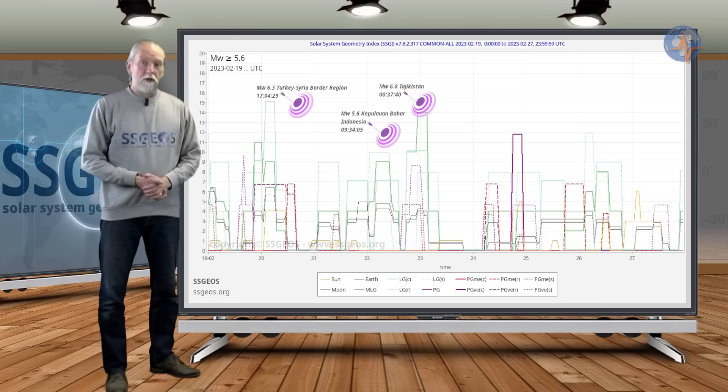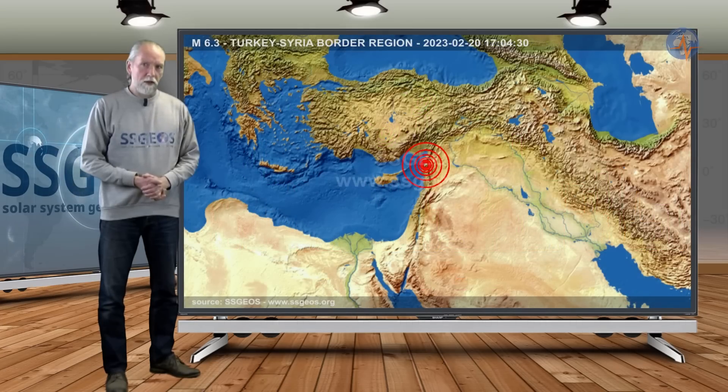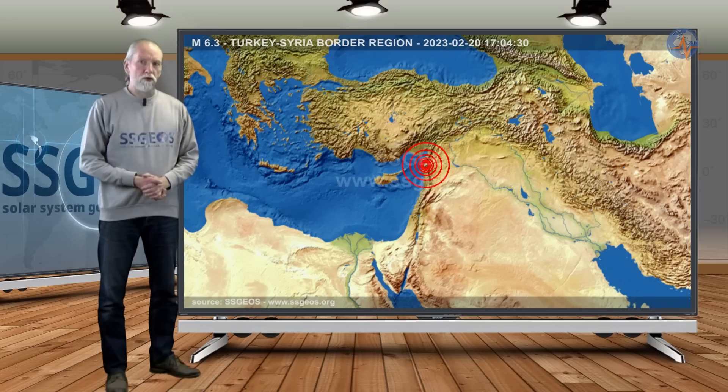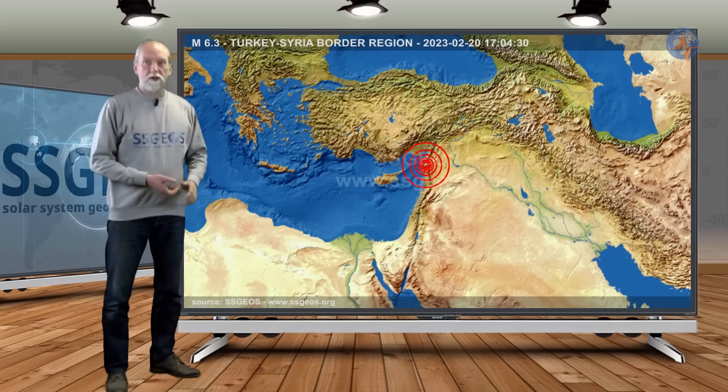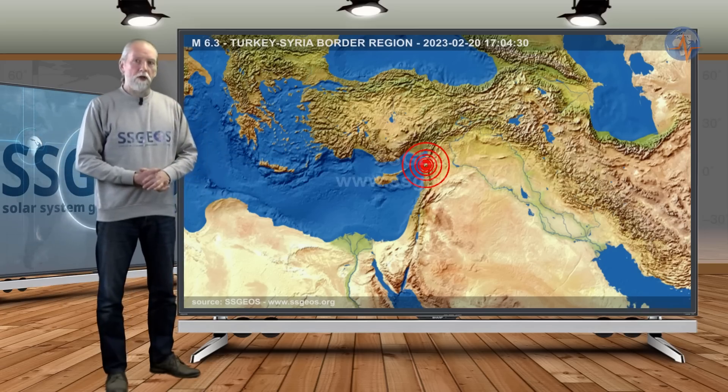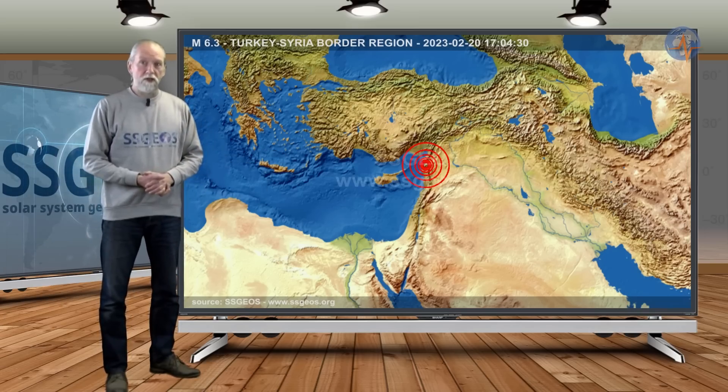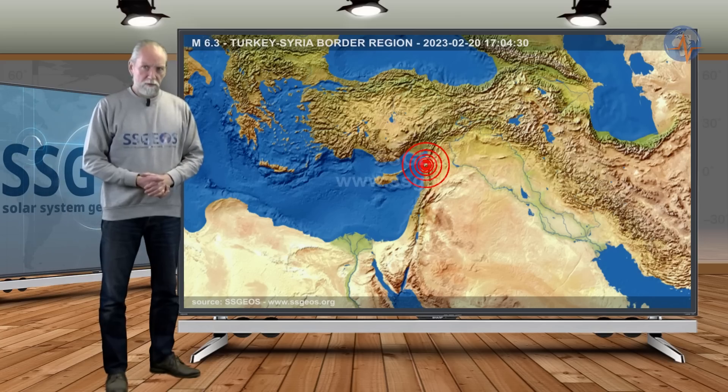Later on the 20th a magnitude 6.3 earthquake occurred in the Turkey-Syria border region. This is not an aftershock, it occurred a little bit to the south and this is because of the stress distribution around the Arabia Plate. There are significant changes since the major earthquakes on 6 February.